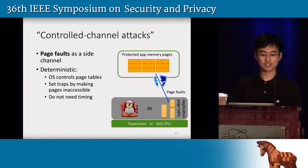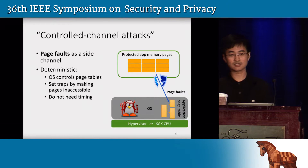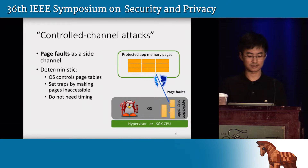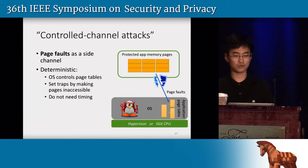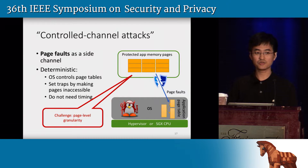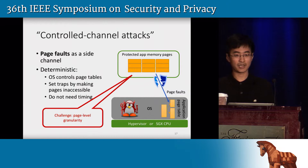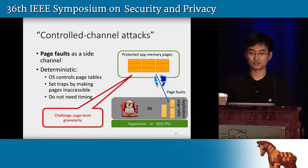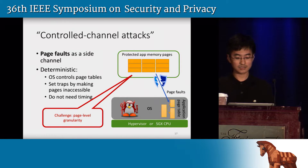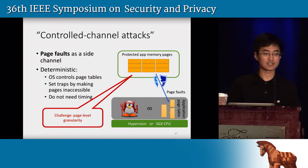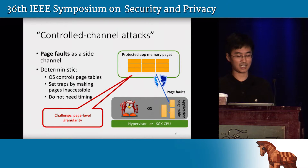The OS controls the page tables and it can set a trap at any page by making it inaccessible. It doesn't even need to do timing to tell whether a trap has been triggered. We do have a new challenge here, which is that page faults only tell page granularity information as opposed to cache line granularity. However, we found that even with this coarse-grained side channel, the attacker is able to reconstruct very fine-grained application data.